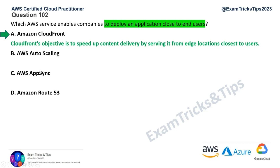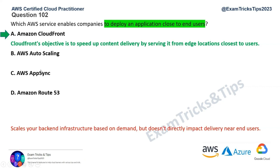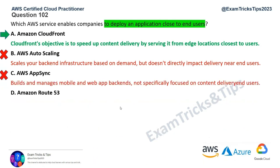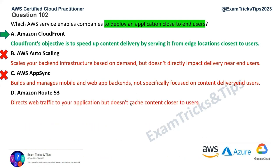Let's rule out the other options. AWS Auto Scaling is for balancing the demand for your infrastructure — it's nothing to do with bringing content nearer to the user, so that's wrong. AWS AppSync builds and manages mobile and web app backends and is not specifically focused on content delivery, so that's wrong. Route 53 is a DNS service used for directing web traffic to your application, but it doesn't cache content for users, so that's incorrect. You're left with option A, which we have already selected.